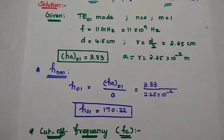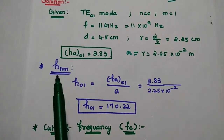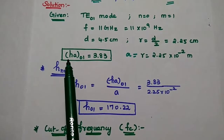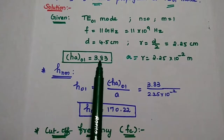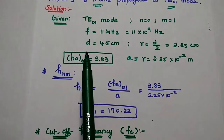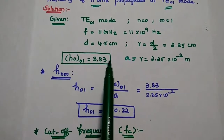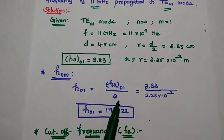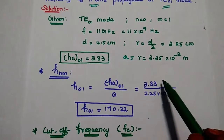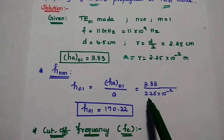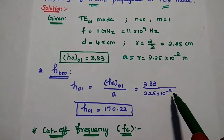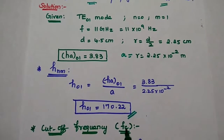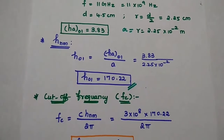Next we find h_nm, a very important parameter for the circular waveguide. For the TE wave, we use h'_a(01) = 3.83. Therefore, h_01 = h'_a(01) / a = 3.83 / (2.25×10⁻²), giving us 170.22 (per meter). We have now obtained the h value.